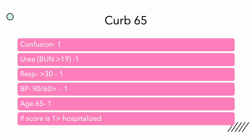I really want to go over the CURB-65 because this is one of the areas where as providers it can be imperative. It stands for Confusion; BUN greater than 9; Respiratory rate greater than 30; Blood pressure 90 over 60; and 65 stands for our older patients. If they're confused, their BUN is elevated, respiratory is high, blood pressure is low, and they've been in and out of the hospital, you want to send them back. You don't want to discharge a patient who goes home and dies — that is the absolute worst.